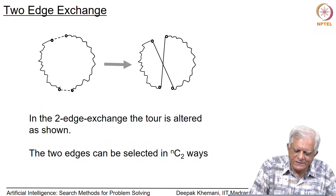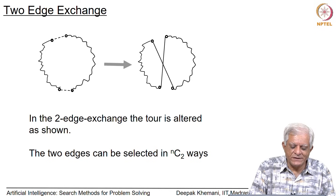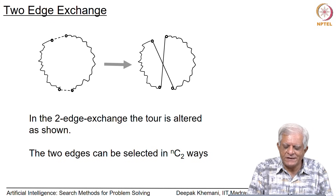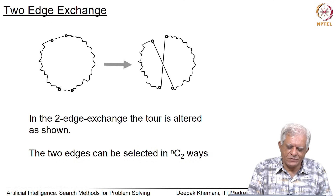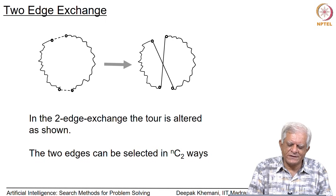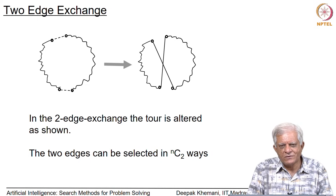Very often one prefers to use an edge exchange instead of a city exchange. In a two-edge exchange, you remove two edges from your tour and reconnect the four cities that were connected to those edges with new edges. A useful heuristic is to remove two large edges — for example, after constructing a tour using the greedy, nearest neighbor, or savings algorithm — and replace them with hopefully shorter edges. The space generated by this algorithm also gives n choose 2 neighbors, since with n cities there are n edges in a tour.